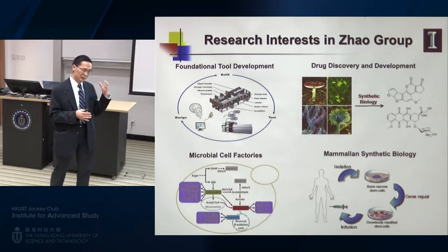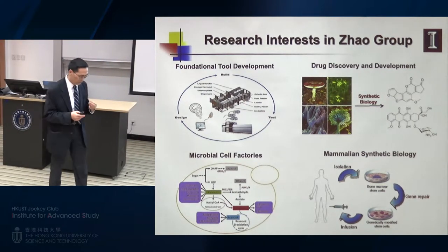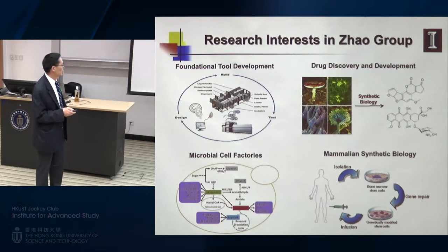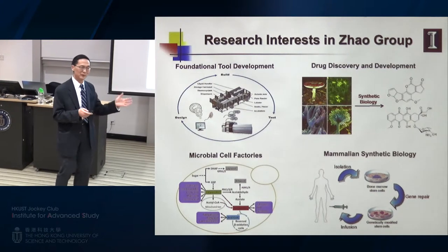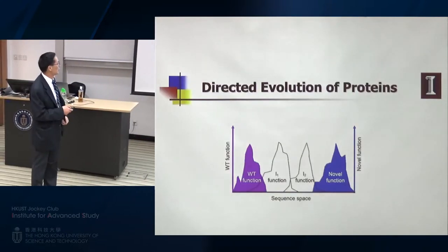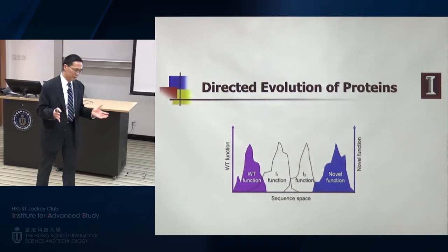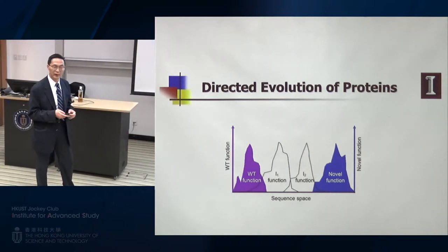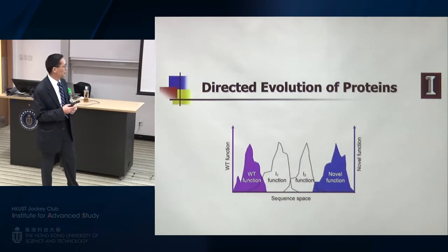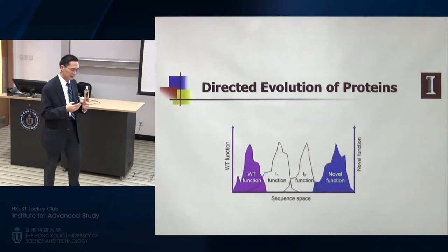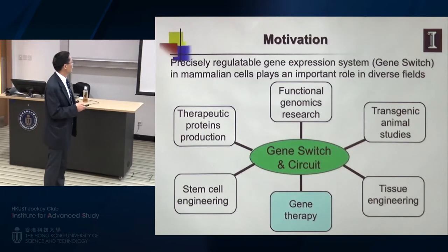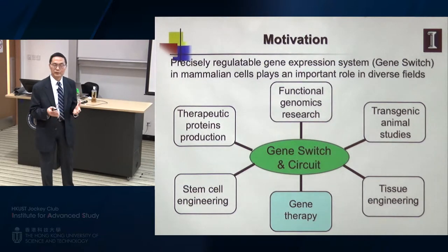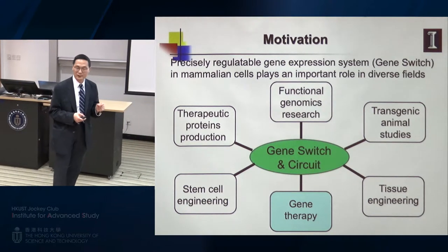Today I'll talk about our efforts focused on directed evolution. We used it in many projects in my laboratory. Some projects I'll discuss were done more than 10 years ago, but I want to give a historical account. One early project was engineering gene switches — artificial transcription factors — where we use small molecules to regulate gene expression temporally, especially in mammalian cells. Applications include gene therapy, where we want to control the dose of therapeutic proteins precisely.